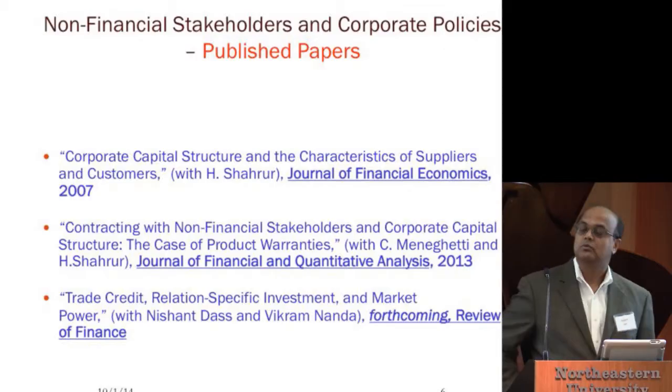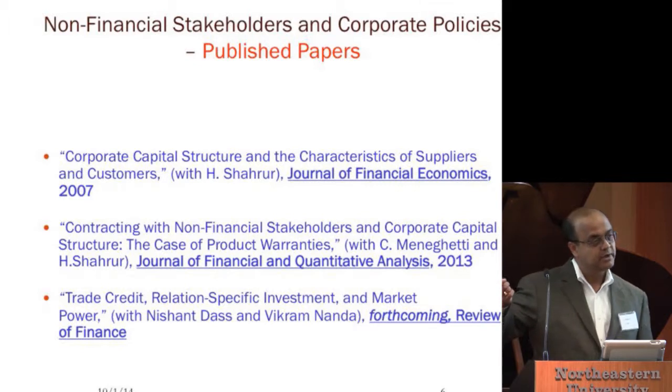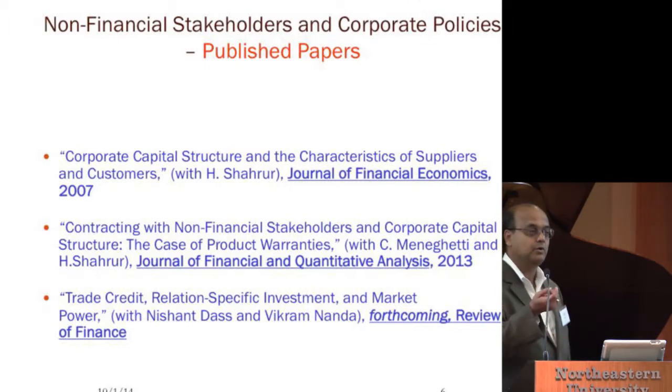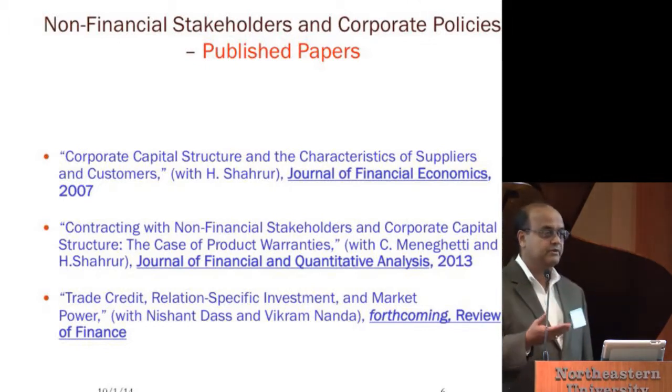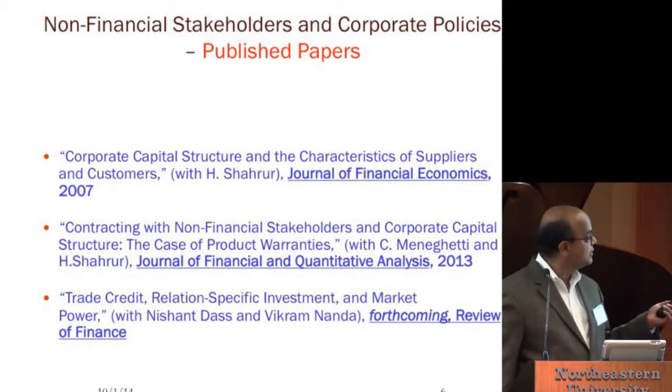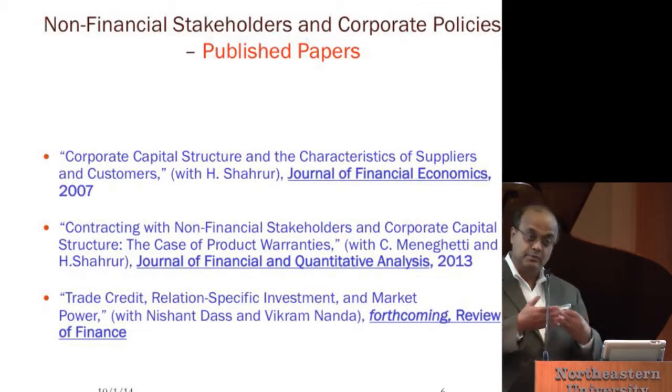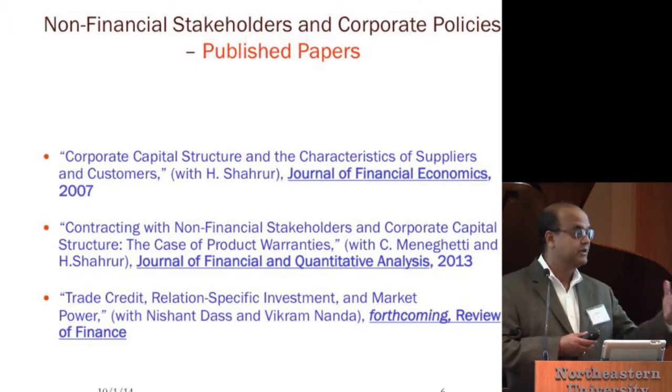The second paper looks at a slightly different part, and may be of more interest to the marketing people. It looks again at customers, but specifically at what happens when a firm offers product warranties and how that affects its financial decisions. By logic similar to the earlier paper, we show that firms offering product warranties must maintain lower levels of debt for those warranties to be credible. We present some interesting tests and data to show that this is indeed true.